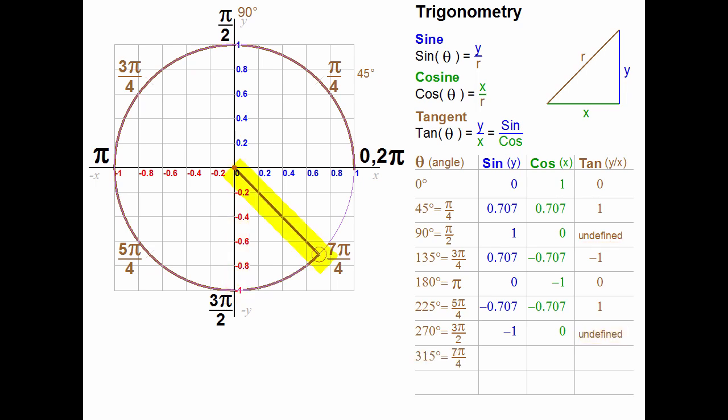In the fourth quadrant, at 7 pi over 4, the value of y is negative, and the value of x is positive. The angle in degrees is 270 degrees plus 45 degrees, which is also 360 degrees minus 45 degrees. The sine is minus 0.707, same as the third quadrant, and the cosine is 0.707, same as the first quadrant. The tangent is minus 1, which is the same tangent at 3 pi over 4. A negative tangent means the direction of a line is from northwest to southeast.